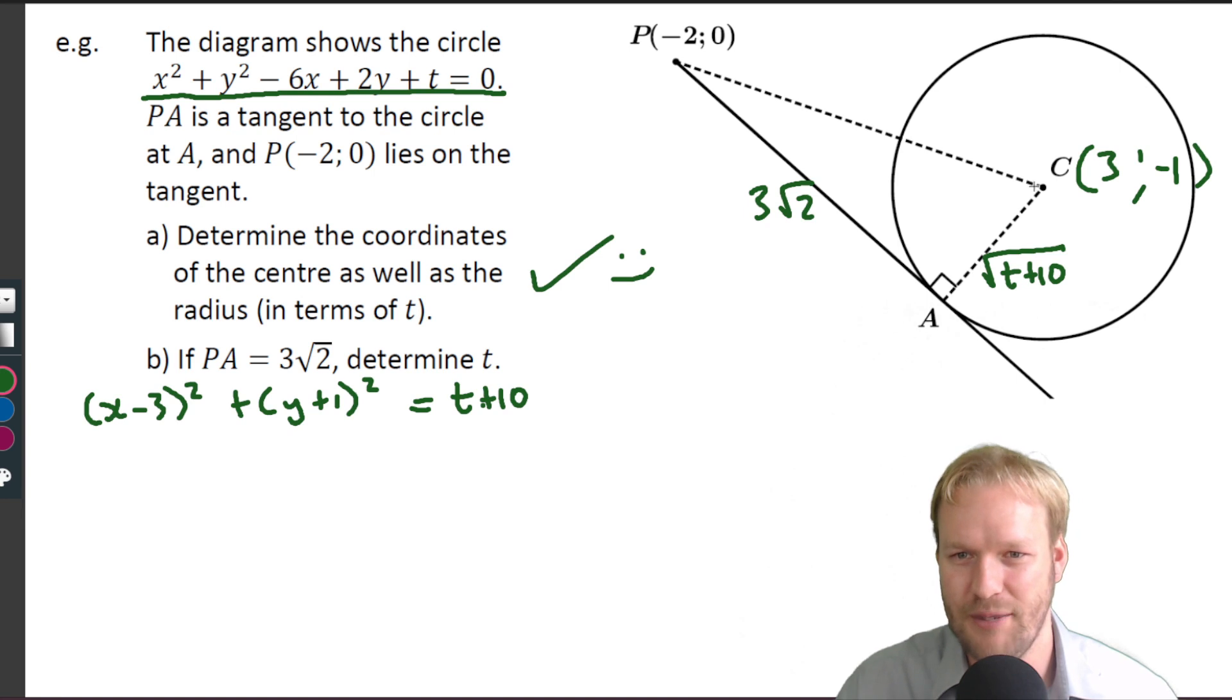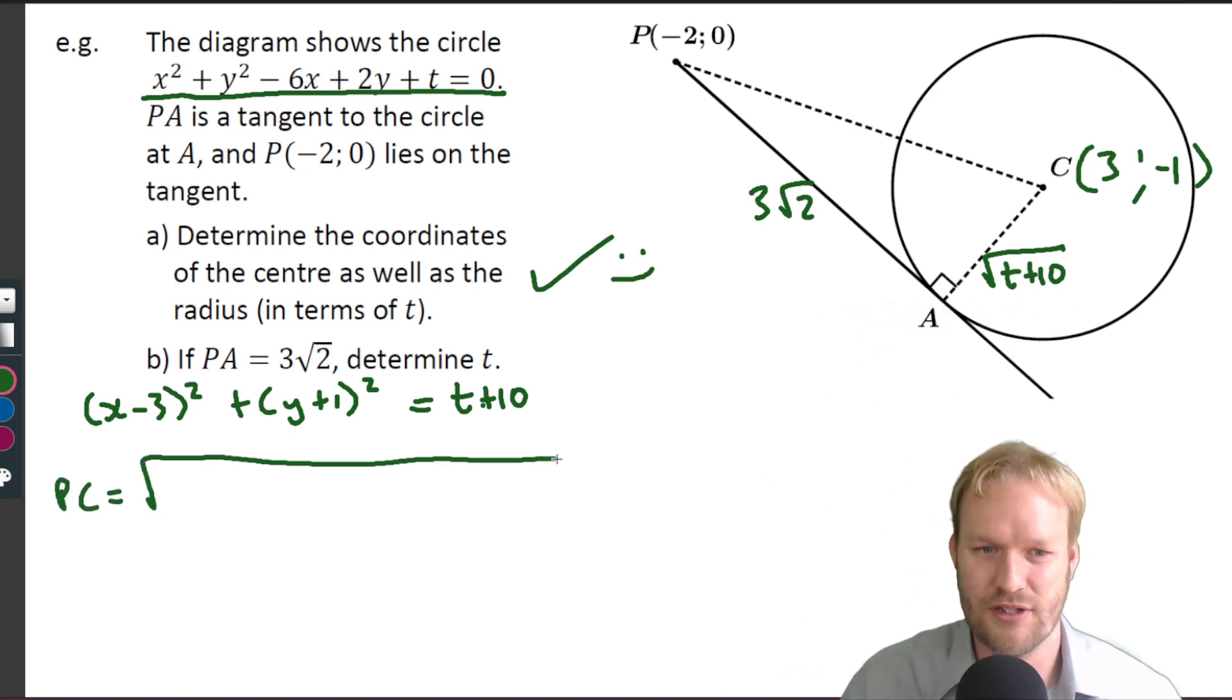And then we can just go this squared plus this squared equals this squared. Okay, well the hypotenuse PC, I'm just going to use the distance formula, which of course is just using Pythagoras anyway.